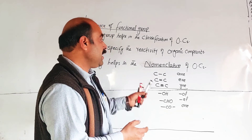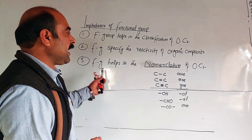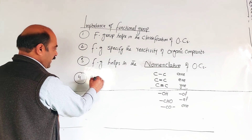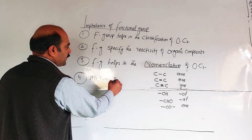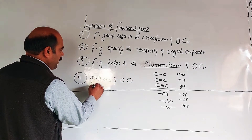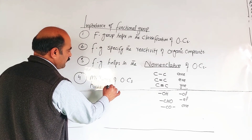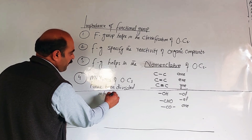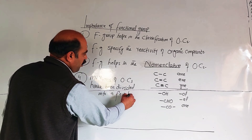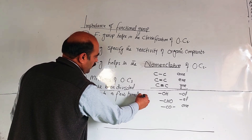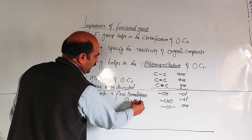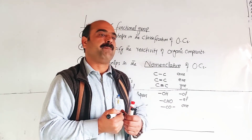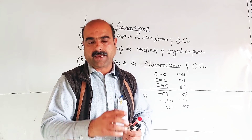The functional group helps in nomenclature of organic compounds. Over 10 million organic compounds have been divided into a few homologous series based on their functional groups. Homologous series is a key concept in organic chemistry.